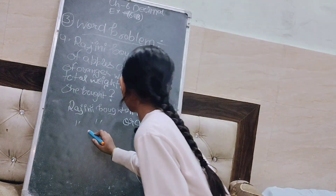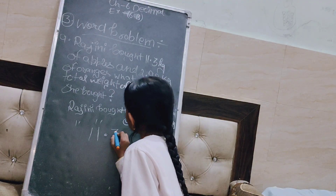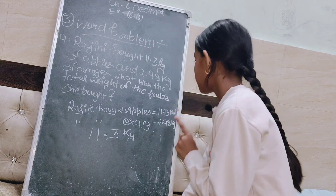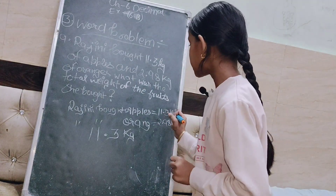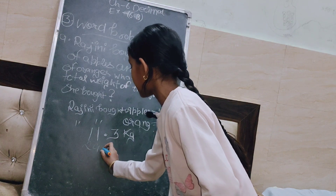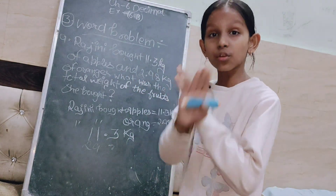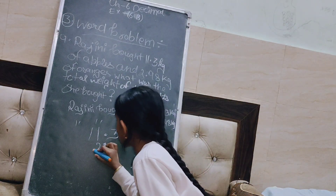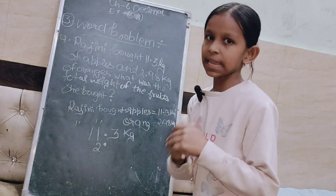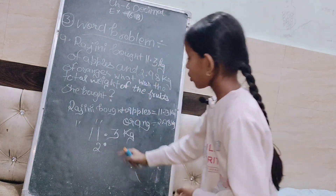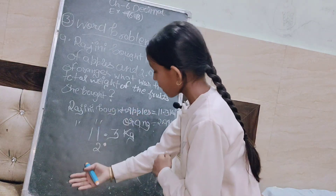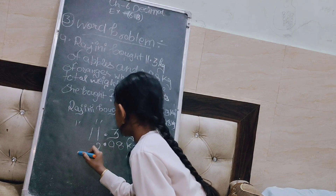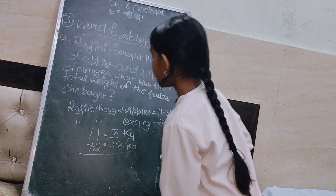तो हम simply क्या करेंगे — पहले ऊपर की date लिखेंगे, यहां पर पीछे kg लगा देंगे। अब हम इसे लिखेंगे, लेकिन कुछ students mistake करते हैं — ऊपर 2 लिख देते हैं फिर 9.8 लिख देते हैं, यह wrong way है। तो हमें point को point की जगह पर ही लगाना है। पहले हम point-point कर देंगे ताकि कोई confusion या mistake न हो। तो जो point के before है उसे put कर दिया और then after यहाँ पर हमने kg लगा दिया।